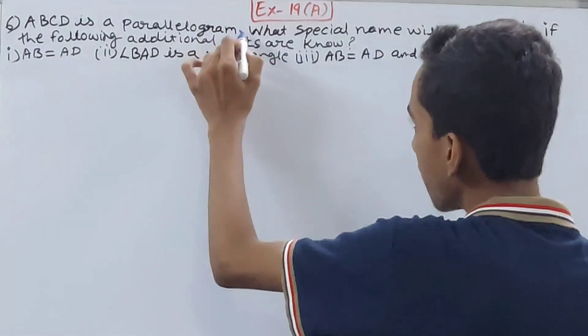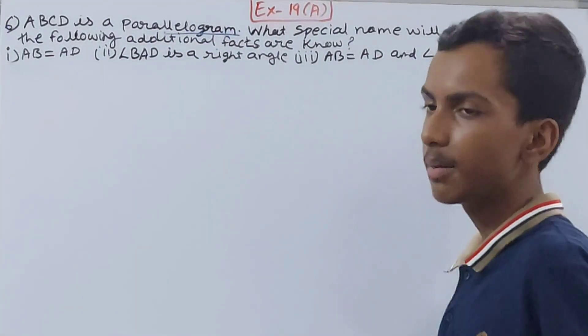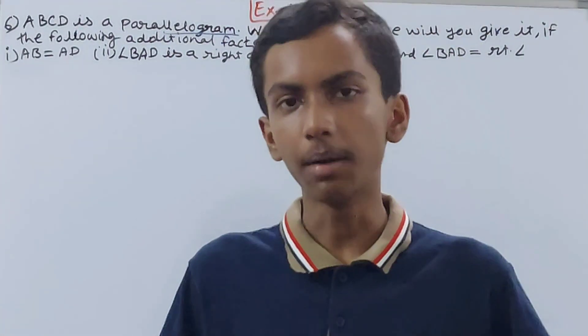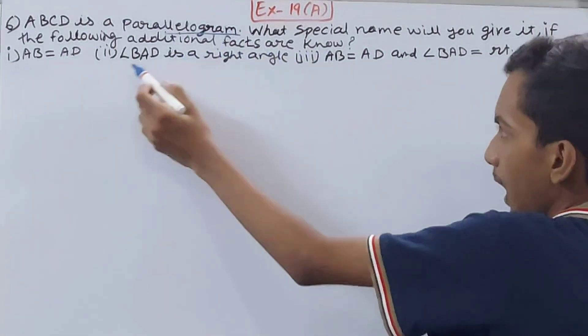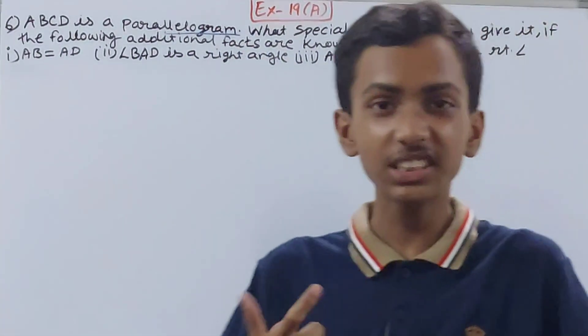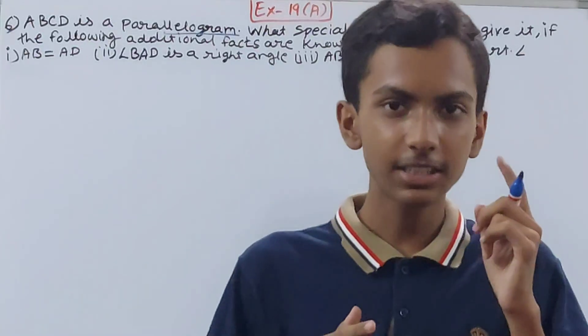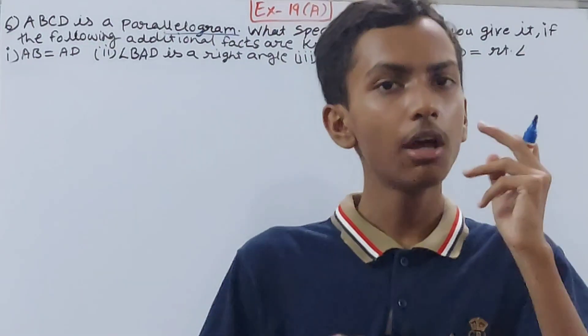They have given us that ABCD is a parallelogram. We have got ABCD as our figure, it is a parallelogram, and they are asking us to tell the type of parallelogram. Is it square, is it rectangle, is it rhombus? Three types are there in our syllabus.